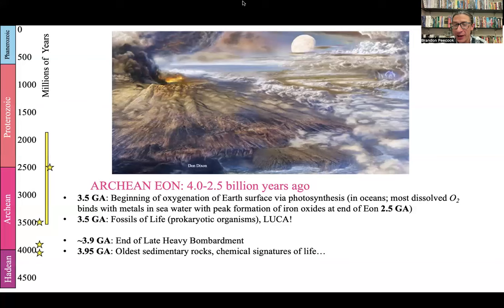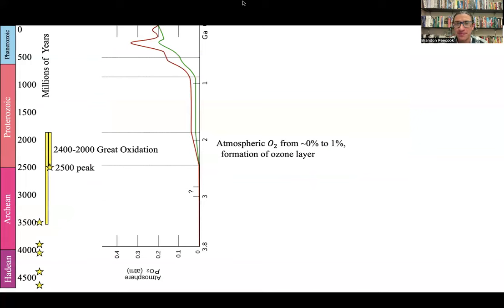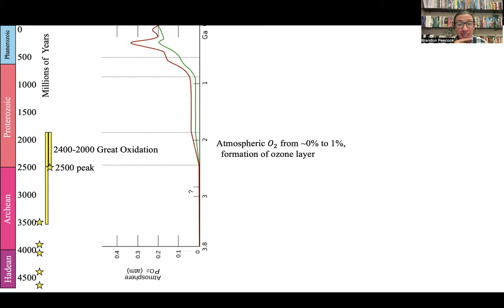Now let's jump into the longest of Earth's eons, which is the Proterozoic. As we head into the Proterozoic, you can see on that graph of atmospheric oxygen partial pressure that there finally is actually an increase. From 3.5 billion to 2.5 billion years ago, there's definitely oxygen getting pumped out by little single-celled organisms, but it's not really accumulating in the atmosphere. That changes at the start of the Proterozoic — we get an amazing growth from almost nothing to about 1% of the atmosphere being oxygen, which is a big deal.